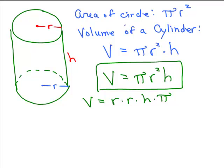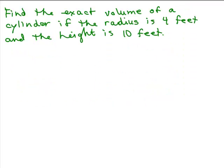So let's try a problem. Let's find the exact volume of a cylinder if the radius is 4 feet and the height is 10 feet. Well, this is convenient. I was given both the radius and the height.